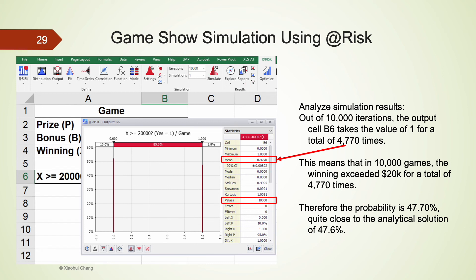Out of those 10,000 iterations, the output cell B6 takes the value of 1 for a total of 4770 times. This means that in 10,000 games, the winning exceeded $20,000 dollars for a total of 4770 times. Therefore, the probability is 47.7 percent, very close to the analytical solution of 47.6 percent. Note that your simulation results will most likely to be different from mine, but should be quite close.